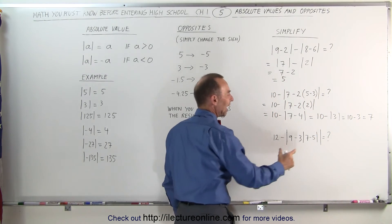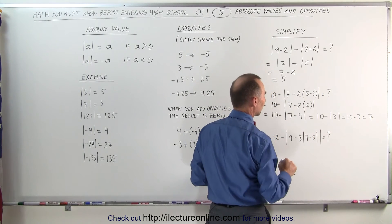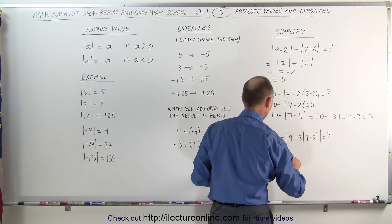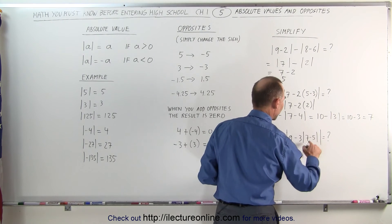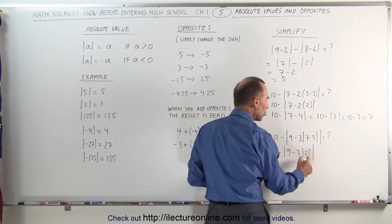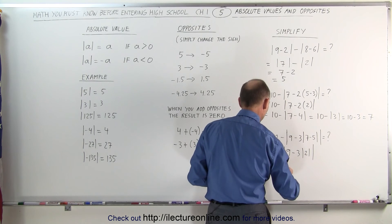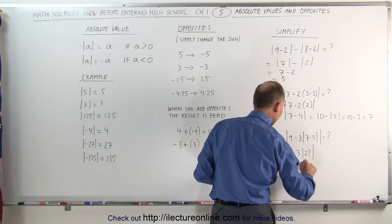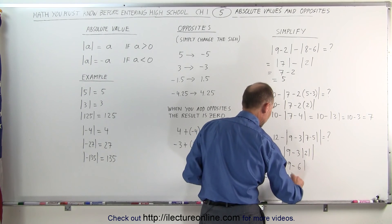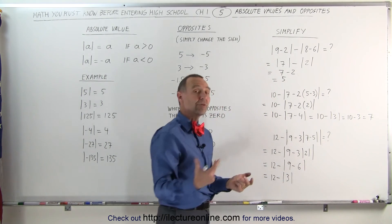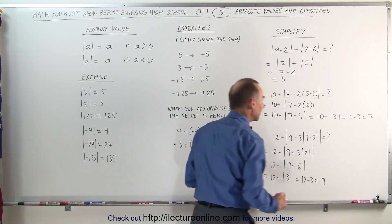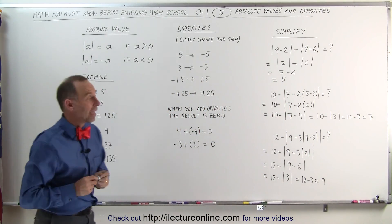Finally, here we have absolute value symbols inside absolute value symbols, so you work from the inside out. This becomes 12 minus the absolute value of 9 minus 3 times 2, where 7 minus 5 equals 2. Since that inner result is positive, remove the inner absolute value symbols — giving 3 times 2 equals 6. Now 9 minus 6 equals 3, which is positive, so remove the remaining absolute value symbols. This becomes 12 minus 3, which equals 9. And that's how you simplify expressions with absolute value symbols.